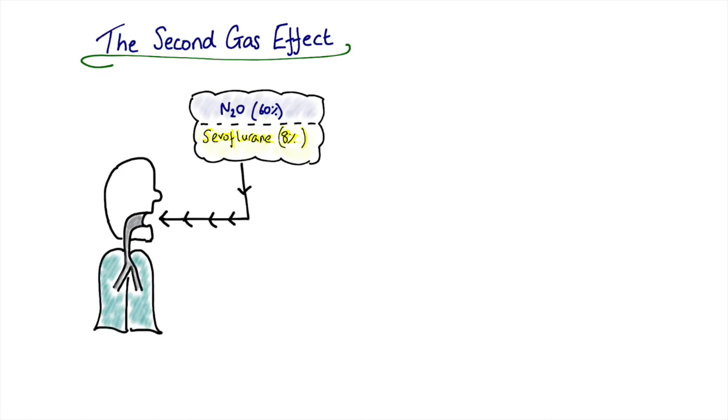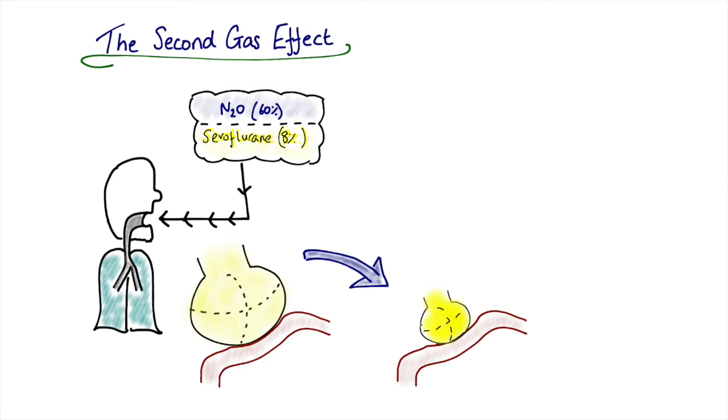But this time we're delivering nitrous oxide in addition to a second volatile anesthetic agent. So we've got some sevoflurane at 8% here as well. If we focus in again on the alveoli and the pulmonary capillary, for all the reasons we've just talked about, delivering high concentration of nitrous will see a reduction in the alveolar volume. And this is the concentration effect.